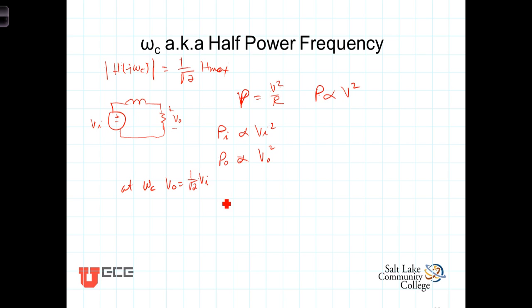Or P out then is proportional to 1 over the square root of 2 V in squared.